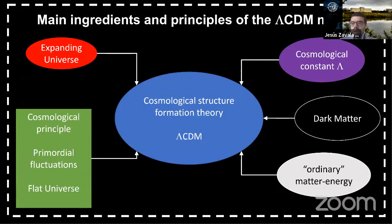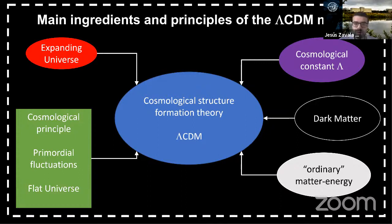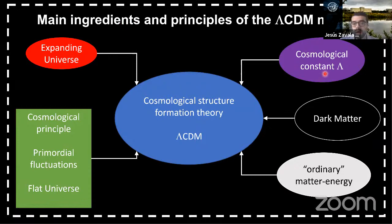Let me mention the main ingredients of the Lambda CDM model. It is the cosmological structure formation theory — the effective part of the standard cosmological model that describes how structures form and evolve in the universe, from shortly after inflation until today. It has some main ingredients and principles. On the left I put the principles and on the right the ingredients. The first principle is that we live in an expanding universe.